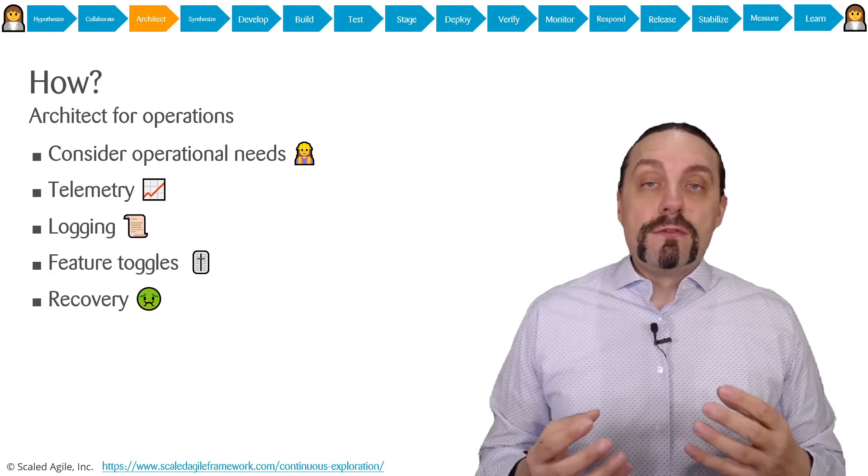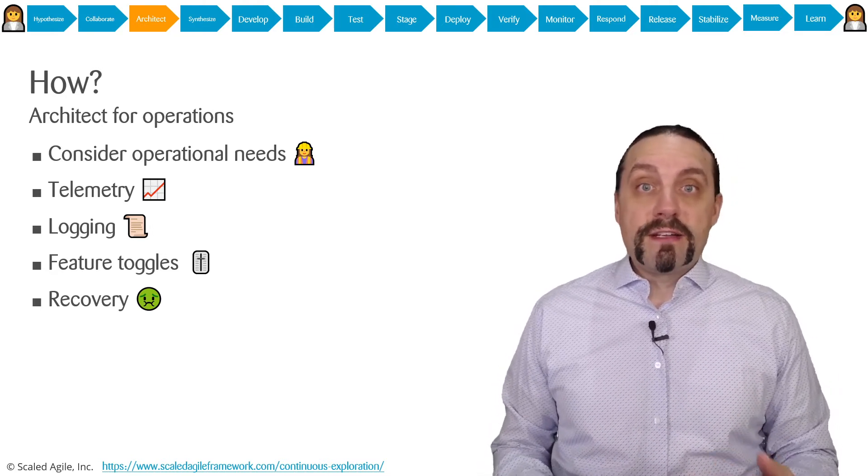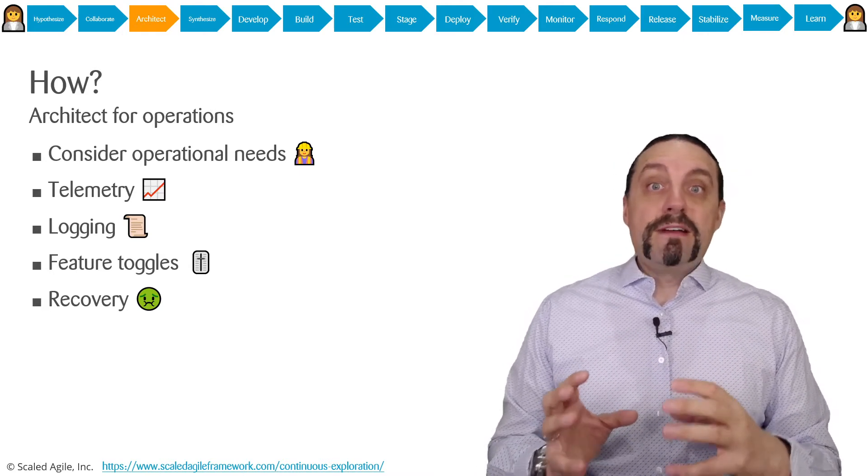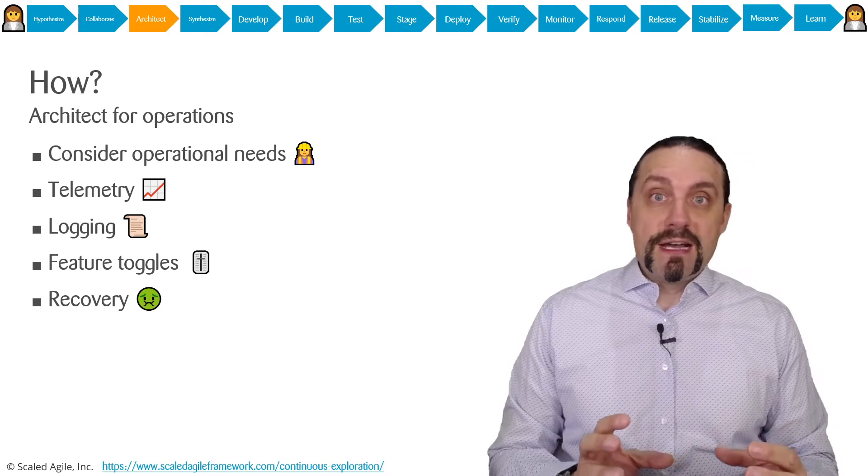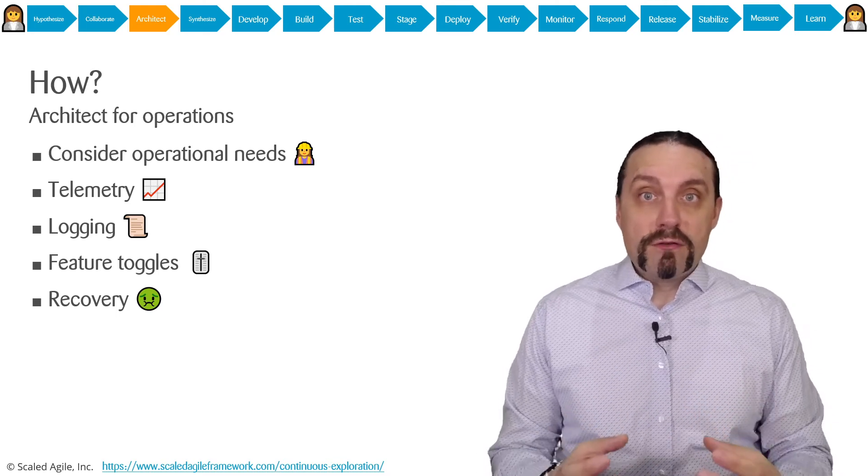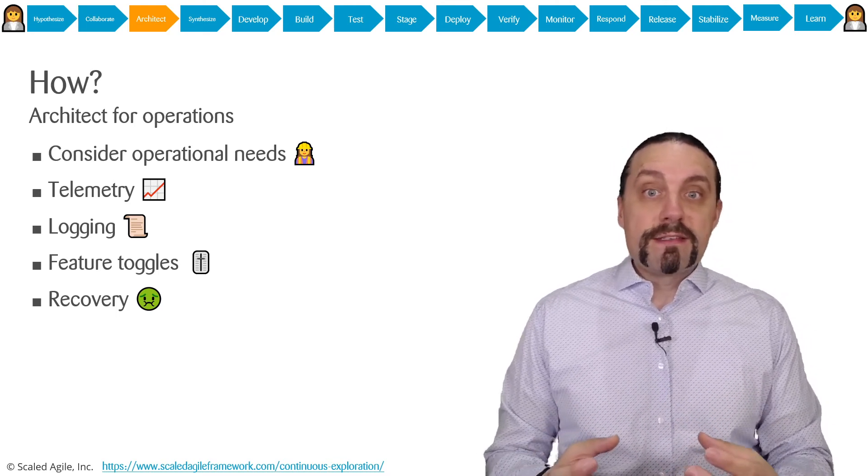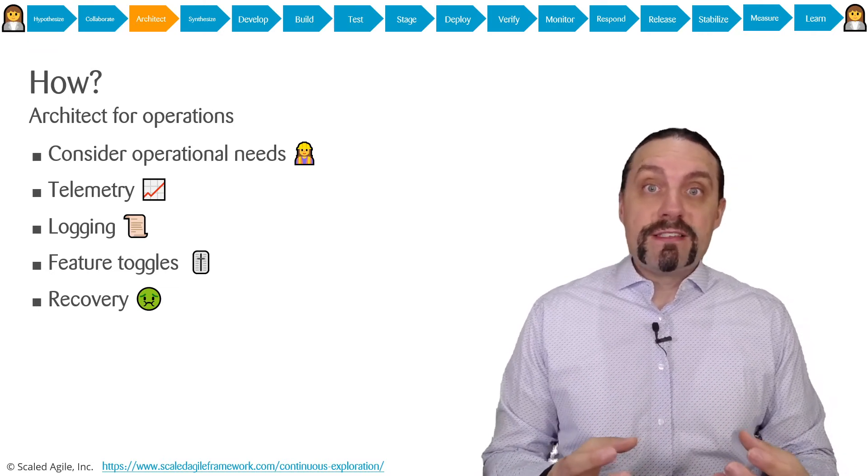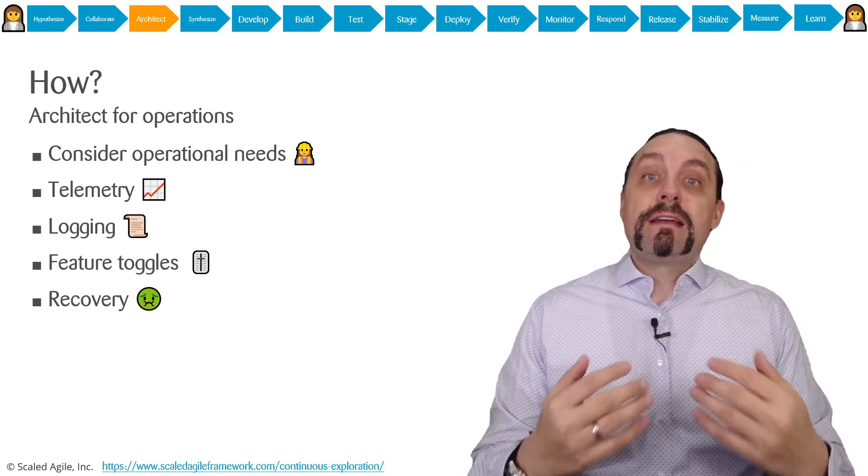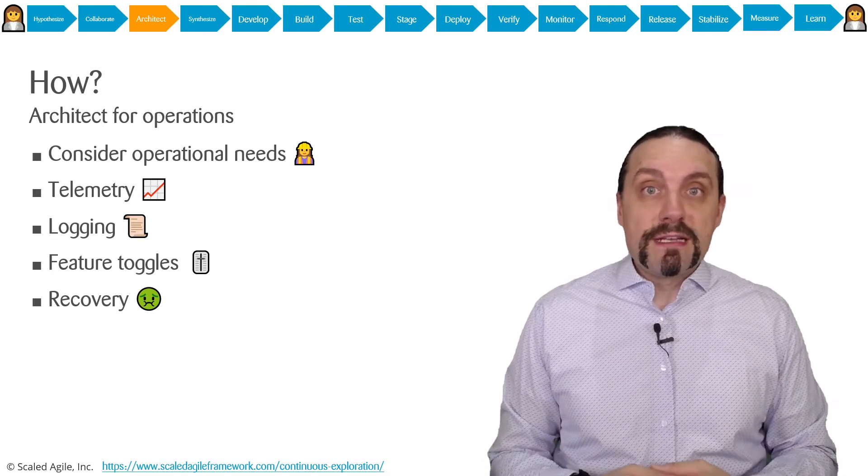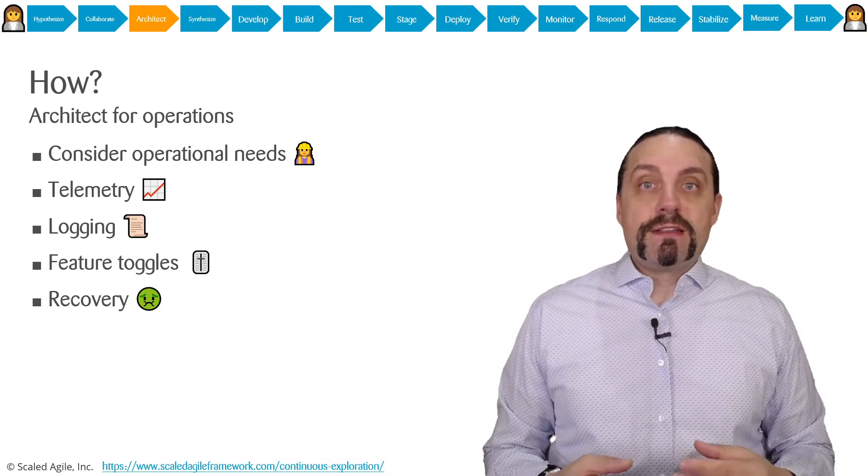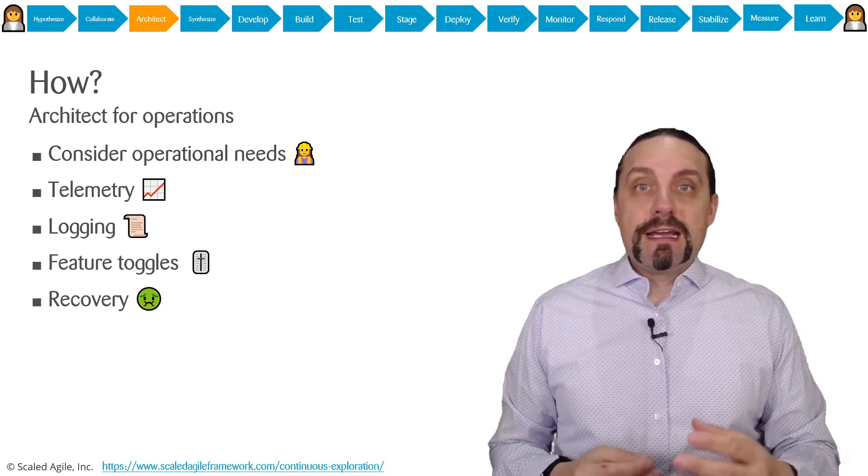We also need to architect for fast recoverability. We need a plan when something happens in production. How can we recover from a major incident and how can we analyze it so we can recover as fast as possible, ensuring business continuity can be assured.